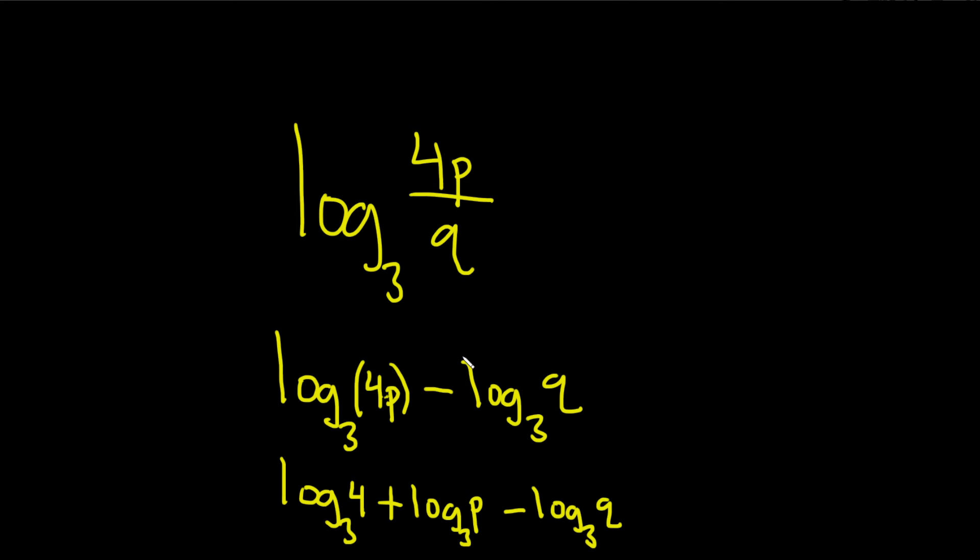So just a quick recap. You first start by using the quotient rule which says that whenever you have a fraction it turns into subtraction. So it's log of the top piece minus log of the bottom piece.